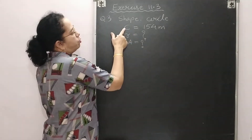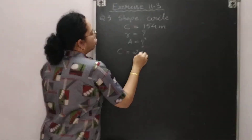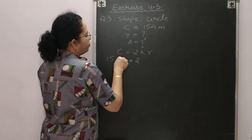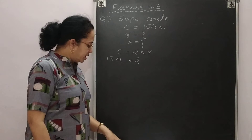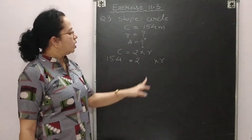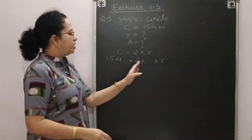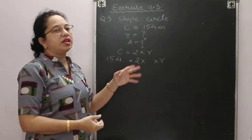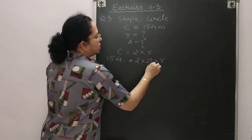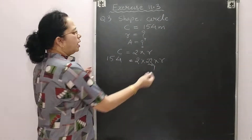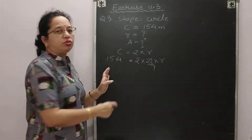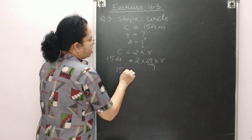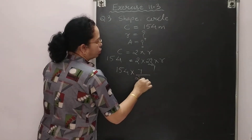Starting with the formula, circumference = 2πr. Write 2, leave place for pi, circumference = 154 meter. Decide the value of pi: since 154 is divisible by 22, write pi = 22/7. Transfer the two numbers to the left-hand side: r = 154 × 7 / (2 × 22).